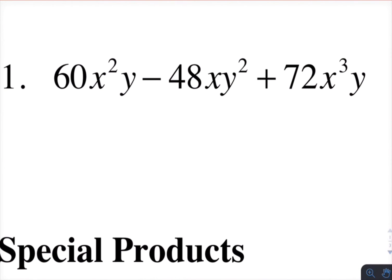So you can see I've got three terms in this polynomial. The integers, the coefficients, they all have a common factor of 12. And then what the variables have in common is an x to the first and a y to the first. Factor that out. You're left with 5x minus 4y plus 6x squared.